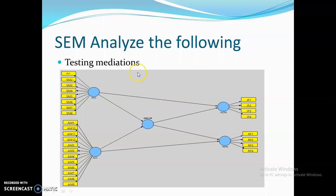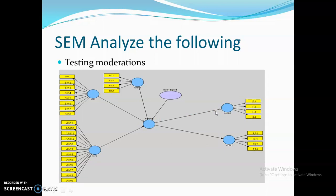Fourth, structural equation modeling is widely used for testing mediating relationships of variables. For example, static marketing capability is directly connected with incremental product innovation and also indirectly connected through exploration. In structural equation modeling, you can simultaneously measure the indirect and direct relationships of independent variables with mediators and dependent variables.